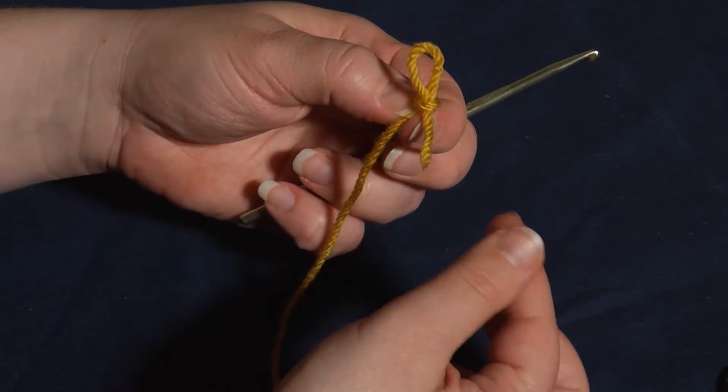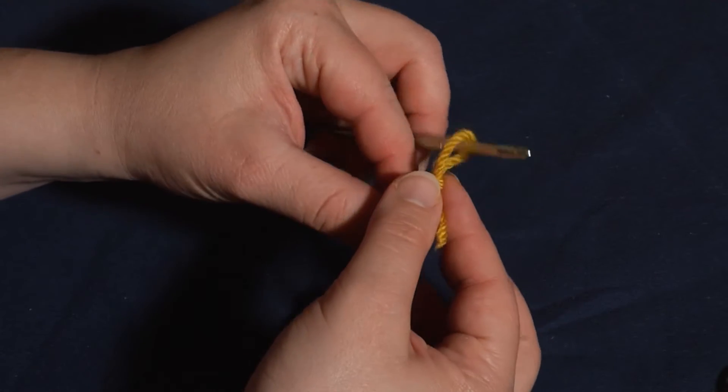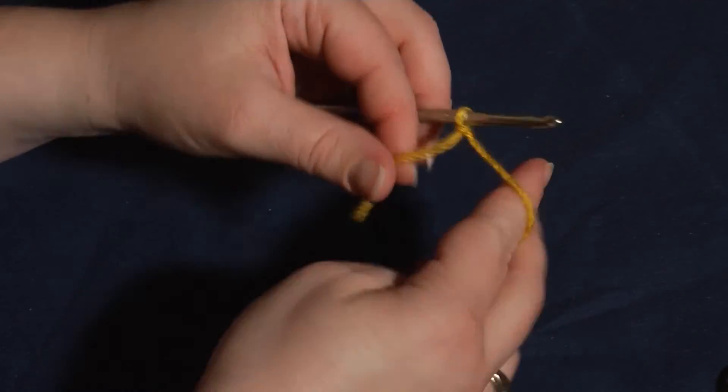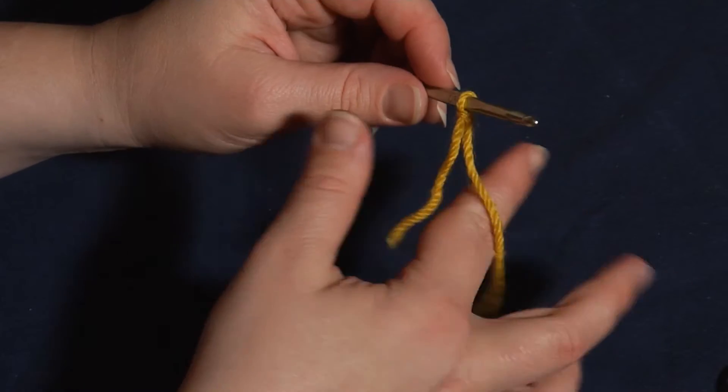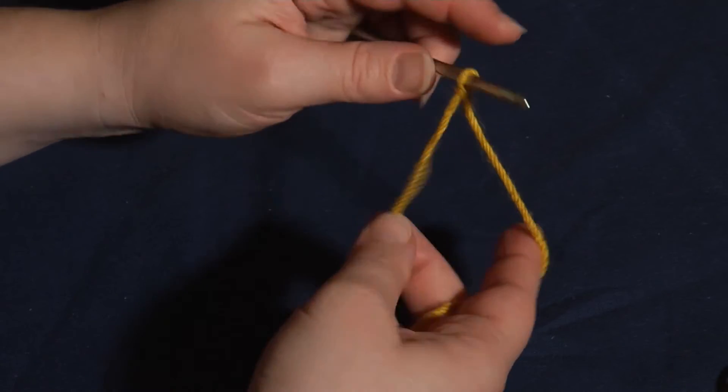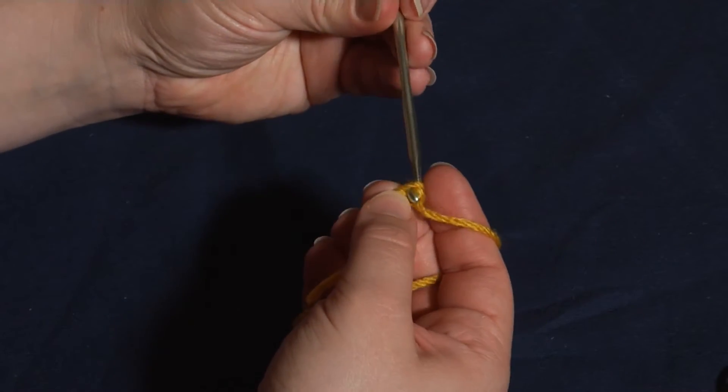Now, this looks huge and sloppy, but the great thing about the slipknot is that it's adjustable. So, you can go ahead and put your hook in, pull on the two ends, and as you can see, it tightens right up. You get a little bit better results if you try to have the cut end facing you, and the working end behind, and then you're ready to make your stitches.